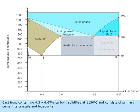Cast iron containing 4.3 to 6.67 percentage carbon solidifies at 1130 degrees centigrade and consists of primary cementite crystals and ledeburite.